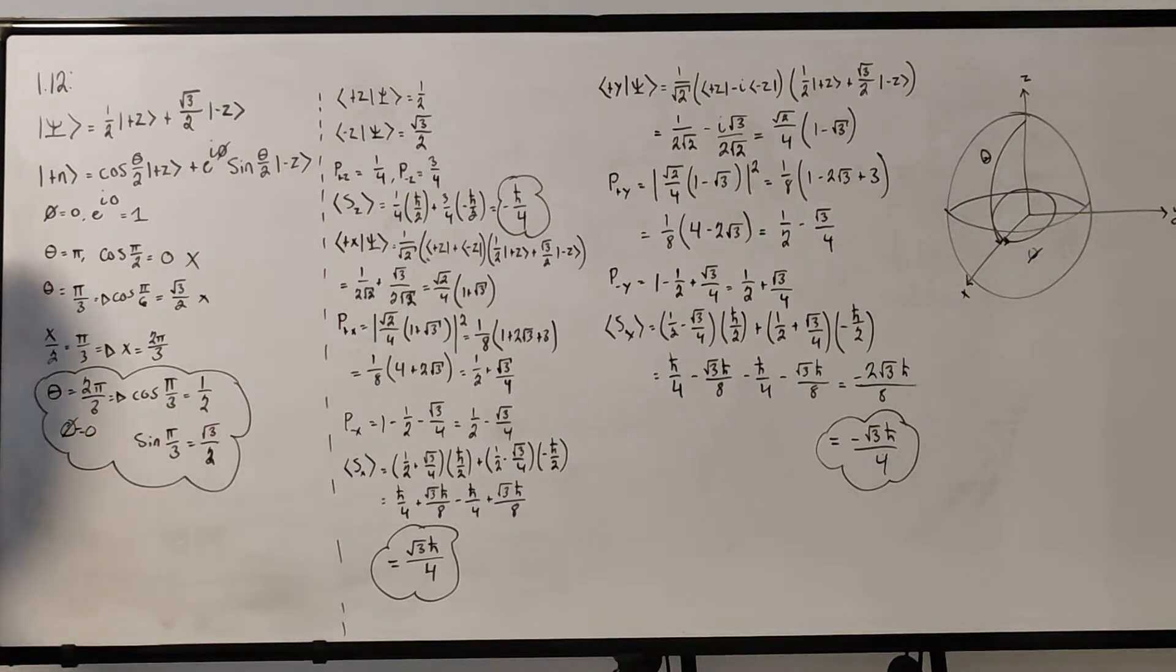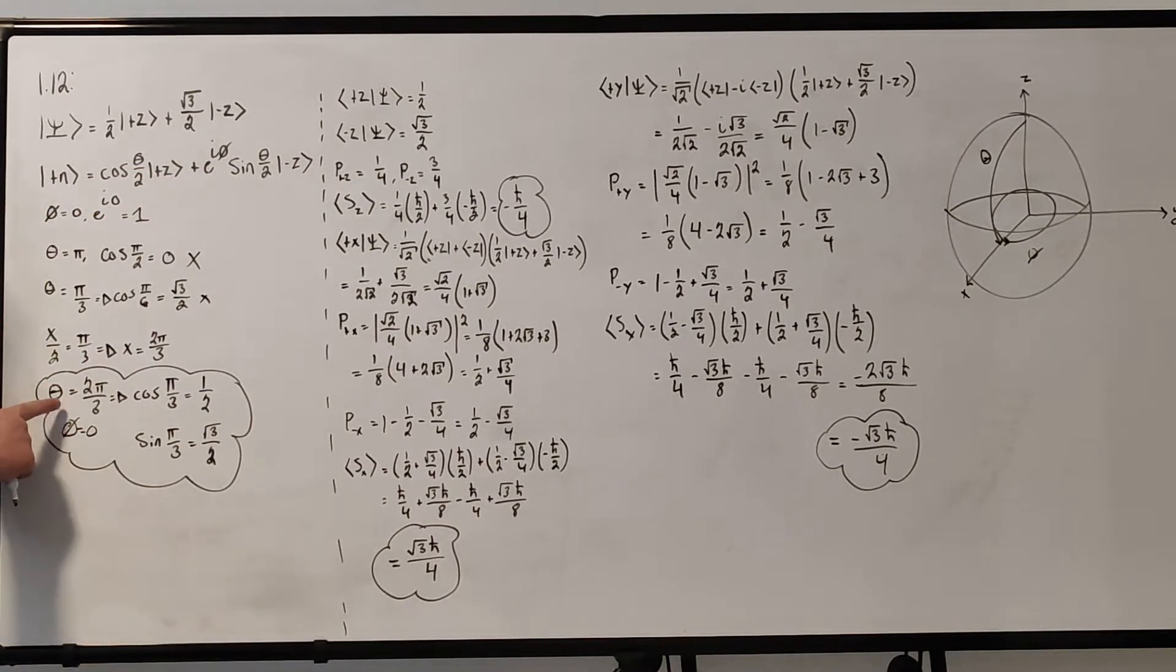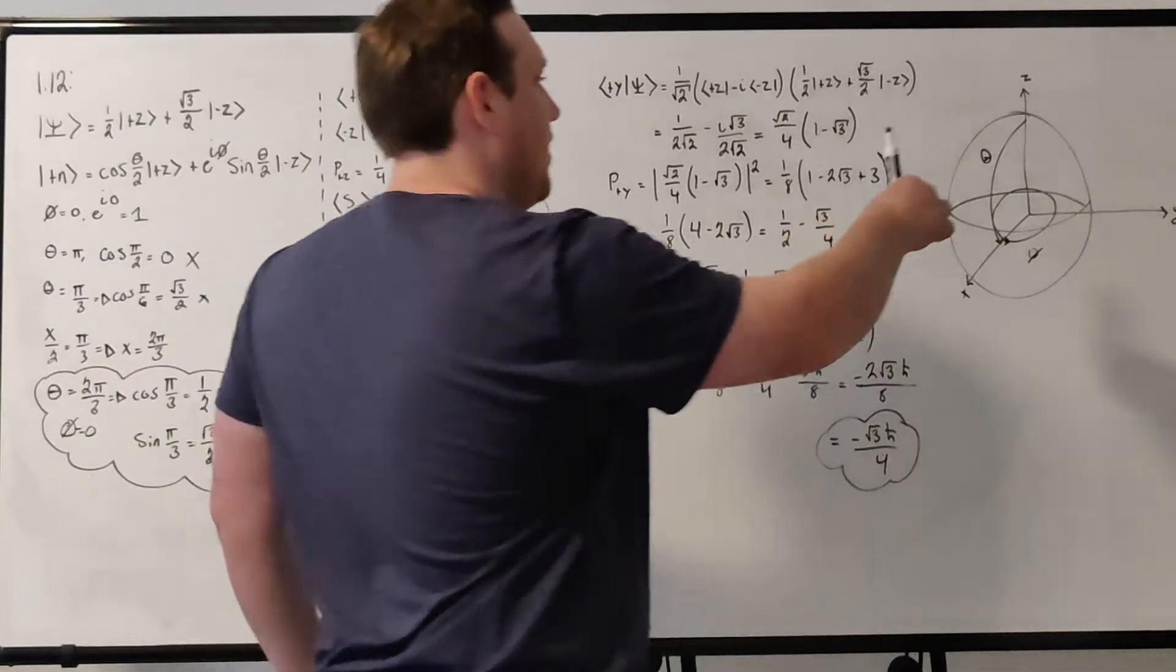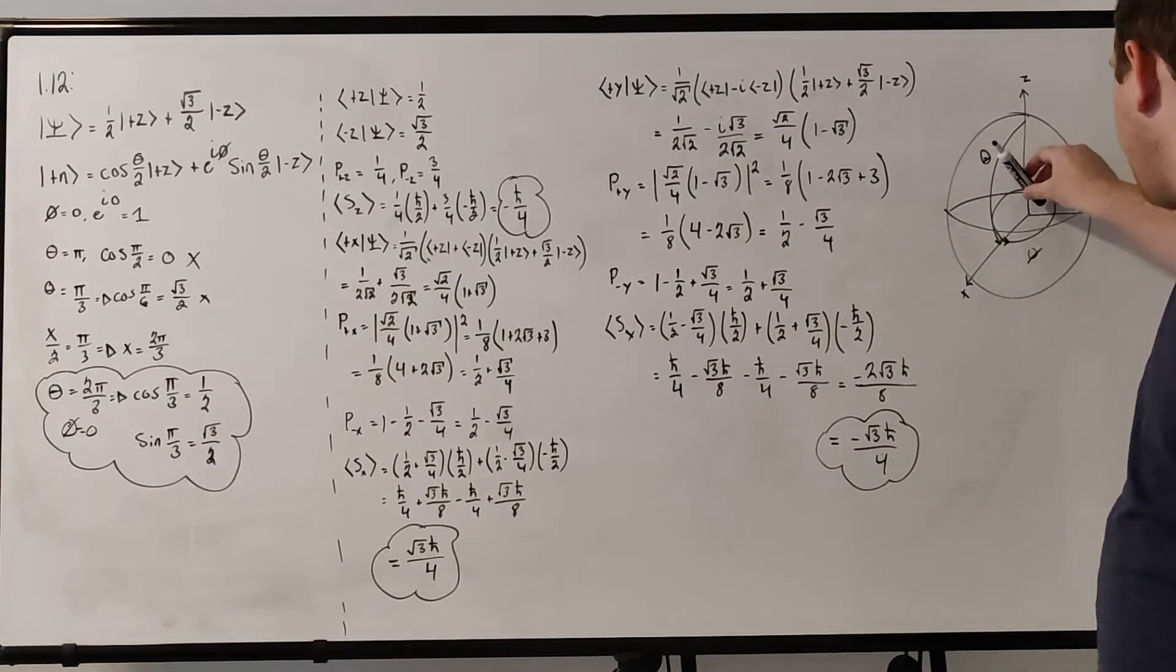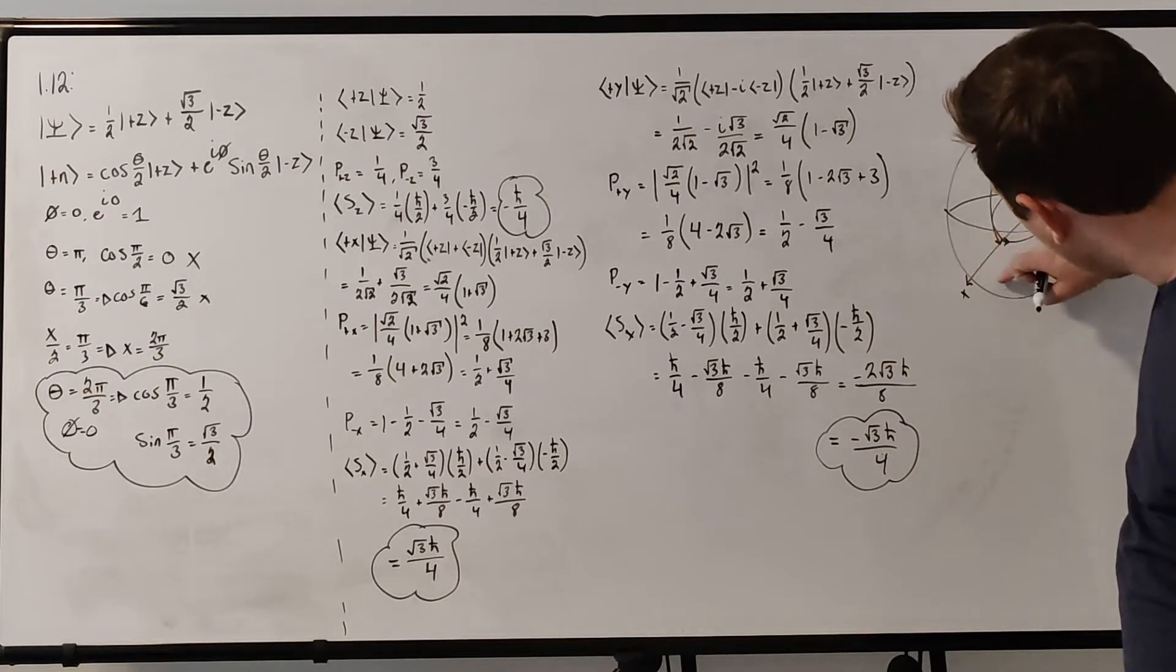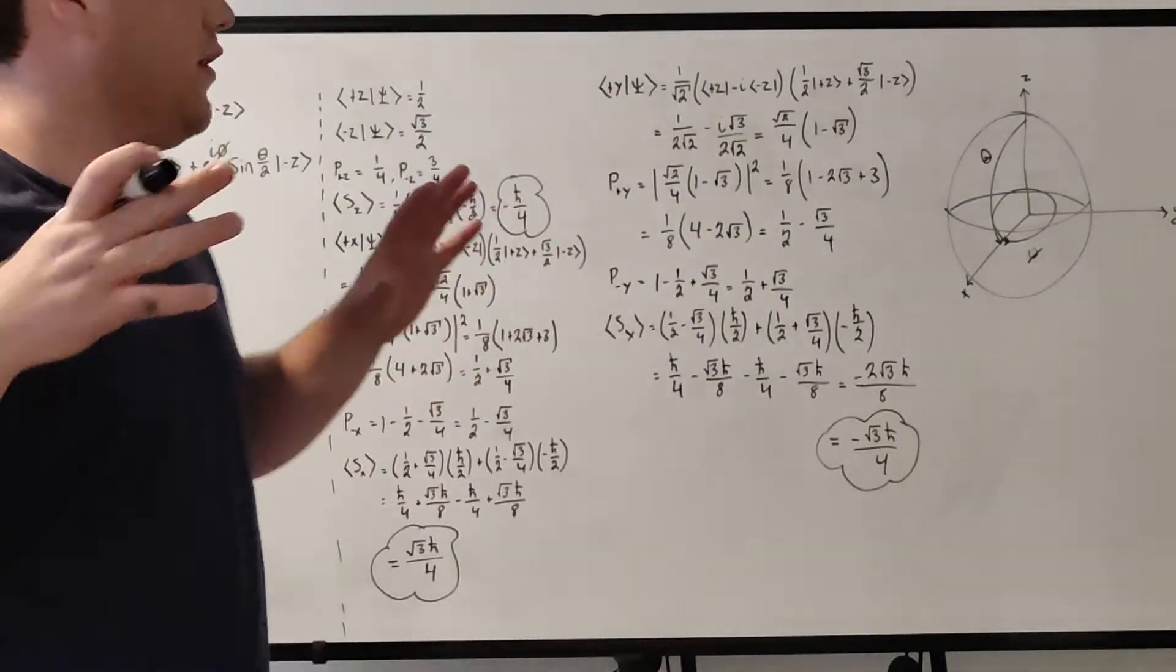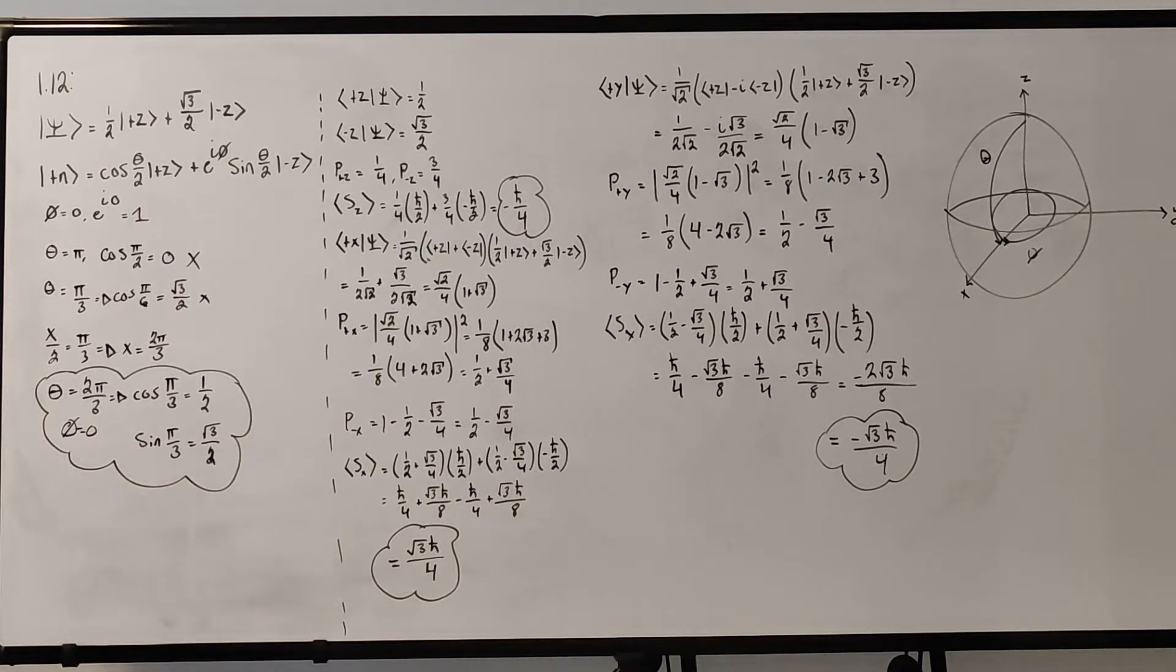So if you plug in 2 pi over 3 for theta, well, the 2's cancel and we just get pi over 3, which gives us what we want. So theta equal to 2 pi over 3, we get cosine of pi over 3, which is a half, and sine of pi over 3, which is root 3 over 2, which gives us the correct values there for those terms. So theta in this case for our state is 2 pi over 3, and phi is 0. So it'd be basically, pi over 3 is like 120 degrees, so it's past the vertical, past the 90 degrees. It's kind of slightly downward. So it'd be kind of like somewhere along the surface of the sphere down here, along the x-axis.